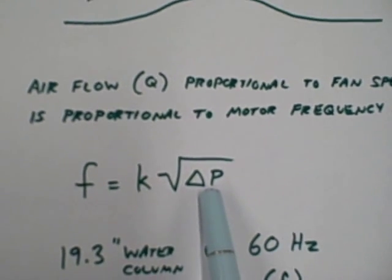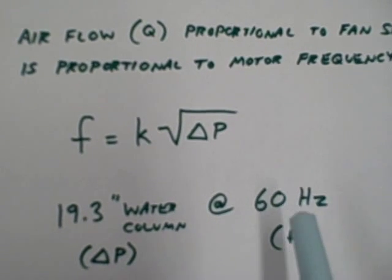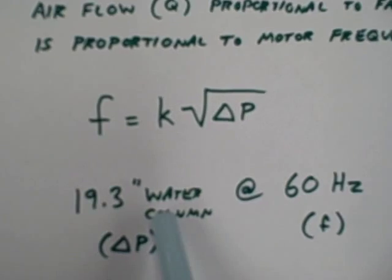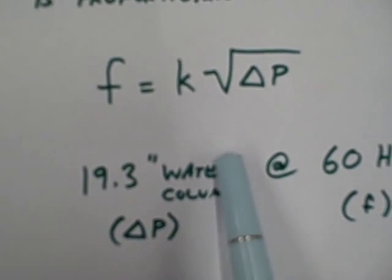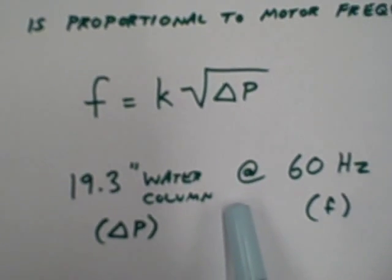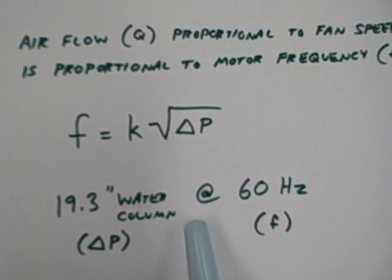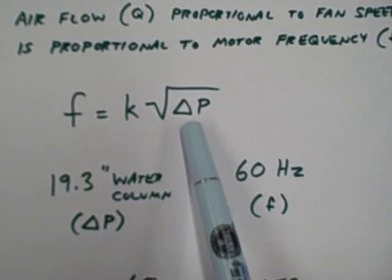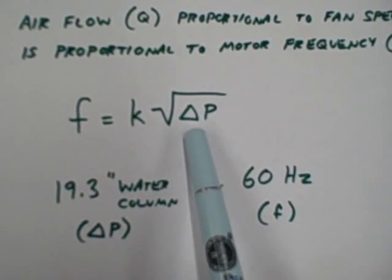In this particular case, I've done a test run, and we've found that at a motor speed of 60 hertz, a frequency of 60 hertz, we get about 19.3 inches of water column differential pressure. I'll demonstrate that here. Then what we'll do is we will change the frequency of the motor, and we'll take a look at how the differential pressure changes. You'll see right away it's not a linear relationship.